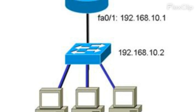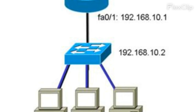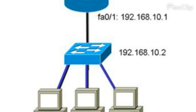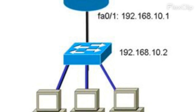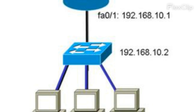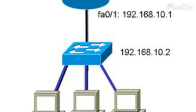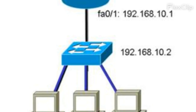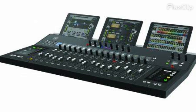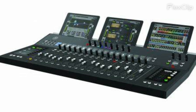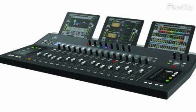The default gateway for the 172.16.0.0/16 network is 172.16.0.254. HSRP is configured with a priority of 100 on the DC1A router Fast Ethernet interface. However, the DC1B router is configured with a priority as the standby router.